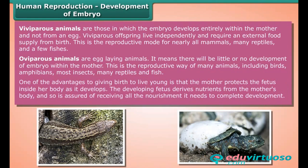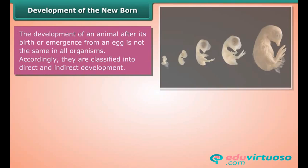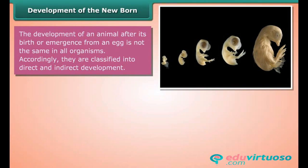One of the advantages of giving birth to live young is that the mother protects the fetus inside her body as it develops. The developing fetus derives nutrients from the mother's body and is assured of receiving all the nourishment it needs to complete development. The development of an animal after its birth or emergence from an egg is not the same in all organisms.